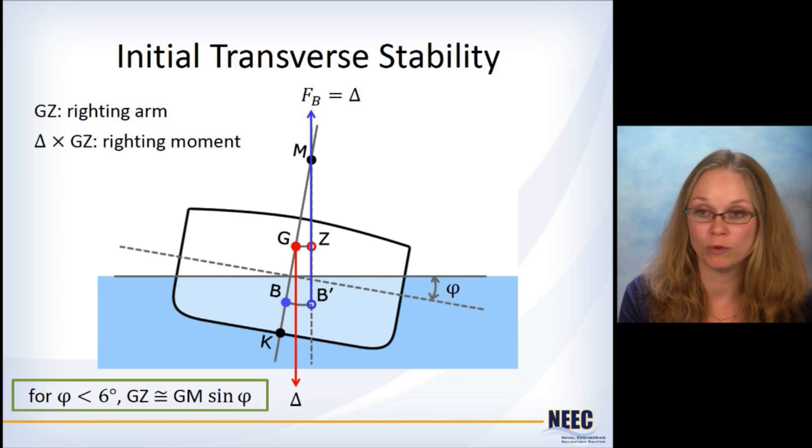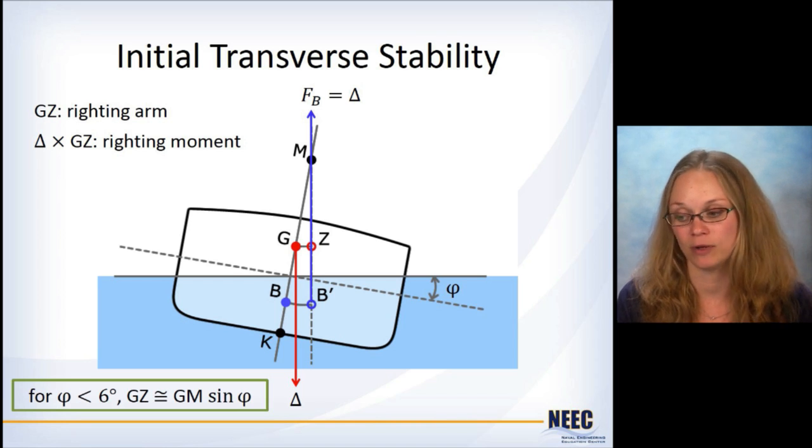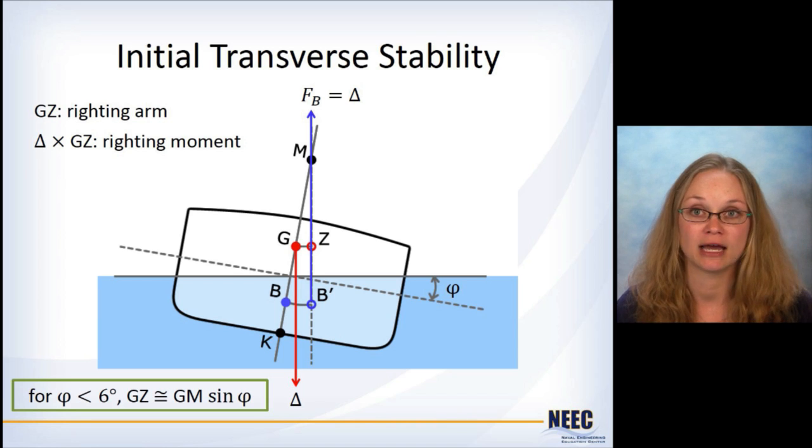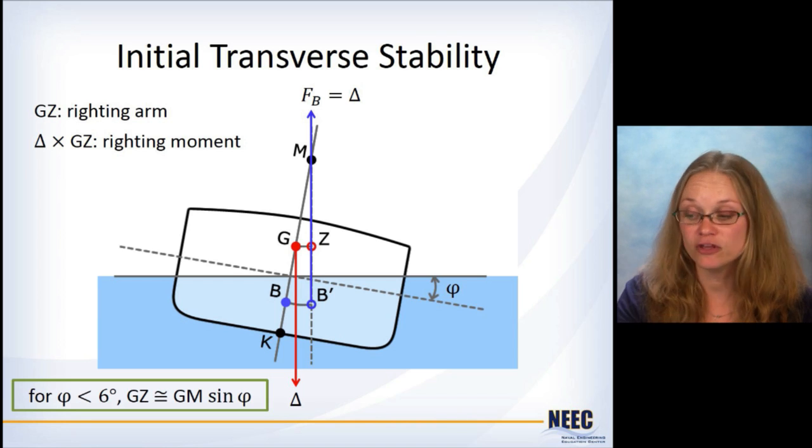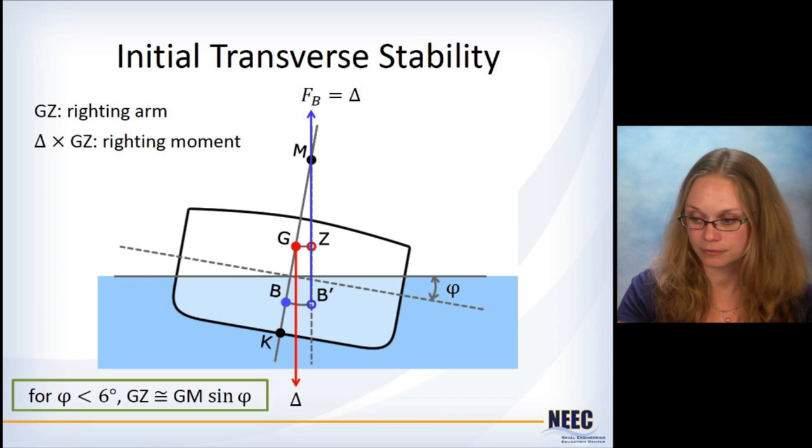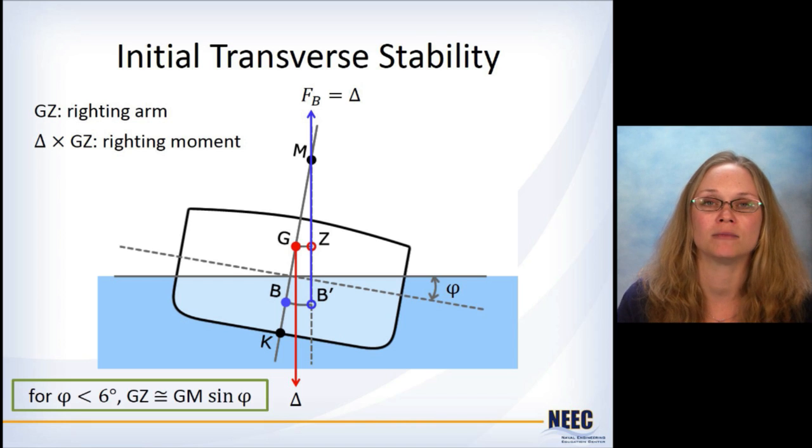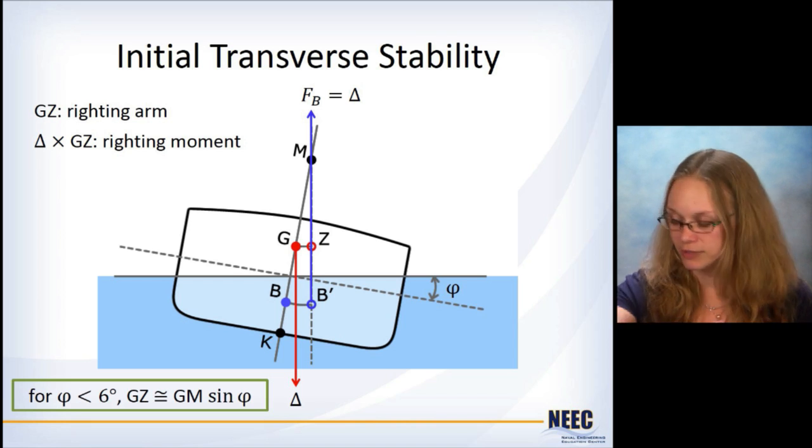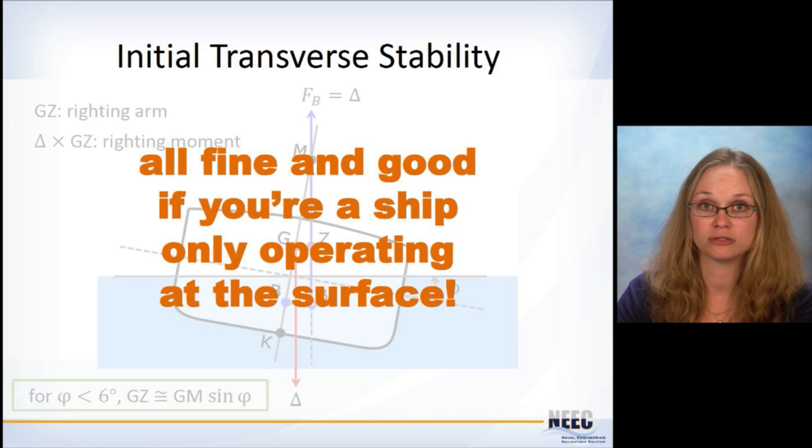But if we know the weight, then we need GZ and we can approximate GZ using GM times sine of phi, which is the heel angle. This holds for the small heel angles. So again, going back to GM is the measure for our initial transfer stability. We take that, we do the same thing with the submarines.